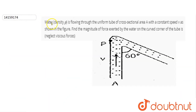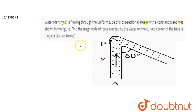Hi guys, we have a question. What is the water density rho flowing through the uniform tube of cross-section area A? The tube of cross-section area A is given with constant speed V, as shown in the figure. Find the magnitude of the force exerted by the water on the curved corner of the tube. Viscous force we have to neglect.